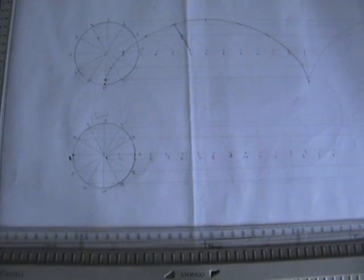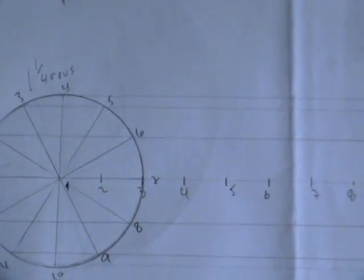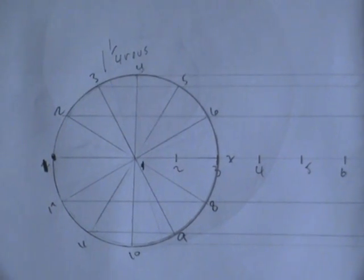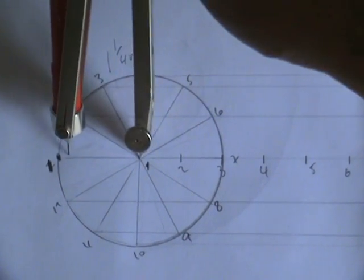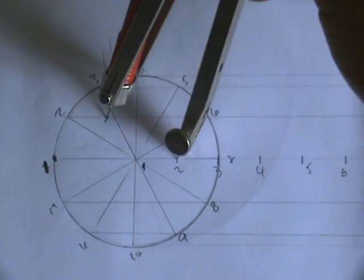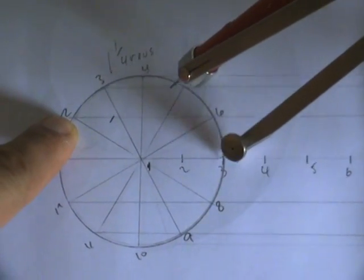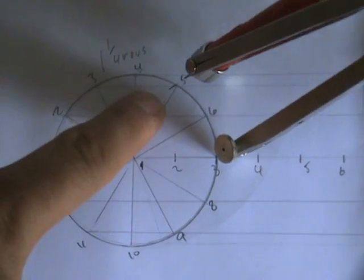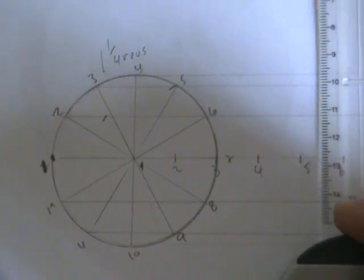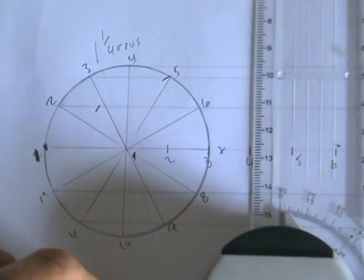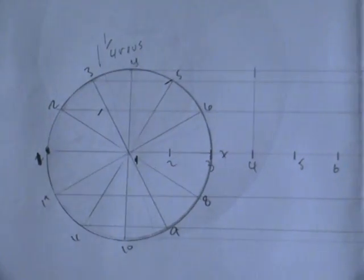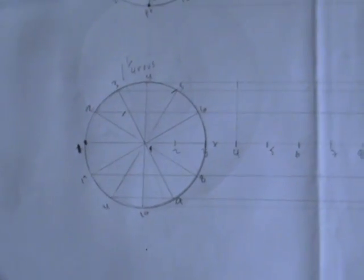So 12 divisions around the circle and 15 on the line. Open the compass as wide as the circle radius - this is my point 1. Point 2 is here and point 2 is at that position. Point 3 is here and point 3 is up there.